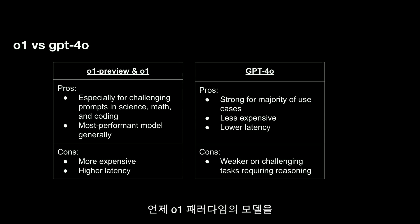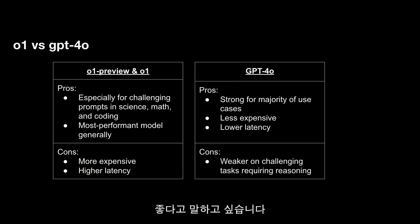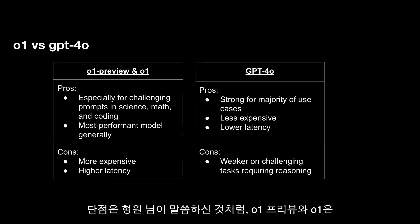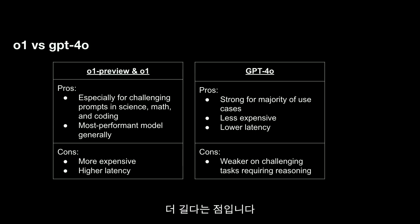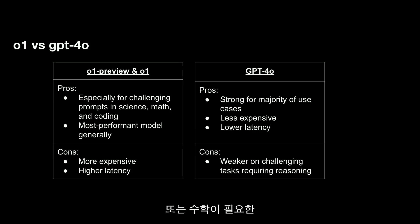I made a table that summarizes when you might want to use models from the O1 paradigm versus GPT-4o. The pros of using O1 preview and O1 are for extremely challenging prompts in the domains of science, math, and coding, or if you just want the best answer regardless of other constraints. The cons are that O1 requires time to think, so it will be more expensive with much higher latency. GPT-4o is still great for the majority of current API use cases — it's less expensive and lower latency — but it's weaker on prompts requiring reasoning, strong coding, or math.